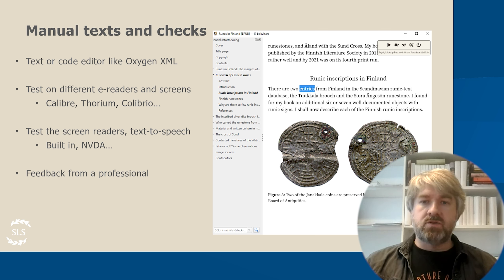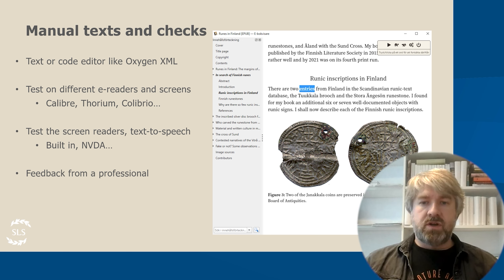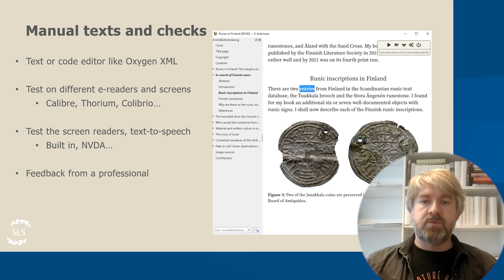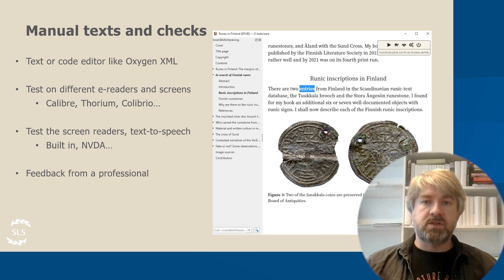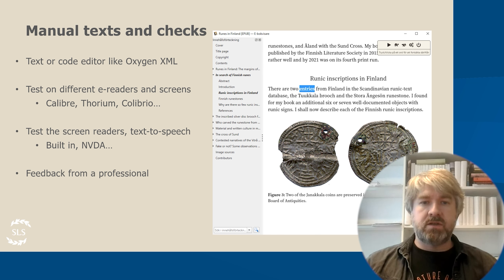It is also important to test how the text-to-speech plays out, either those built-in to the eReaders or with screen readers like NVDA. This can reveal problems in the structure or coding which you can then fix. Using assistive technology like screen readers is a good first step, but it's also a good idea to have expert users provide feedback. In short, start small and take one step at a time. Testing is very important and there are great free tools that can do the basic testing. After you've reached a certain point, I'd recommend you have an external expert take a look at your files and provide easy-to-follow feedback so you can improve your workflow and the accessibility of your eBooks.